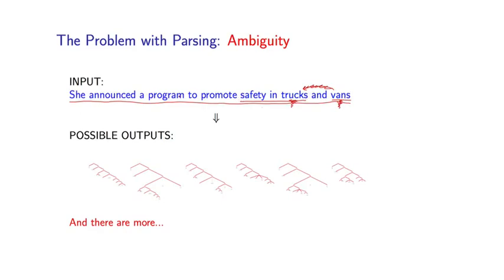Here's another example. Under another interpretation, she could be announcing a program to promote safety where the entire program is located in trucks and vans. That corresponds to an interpretation where this preposition in is modifying the program. So the program is actually located in trucks and vans. Again, a crazy interpretation, but a valid one for this particular sentence.